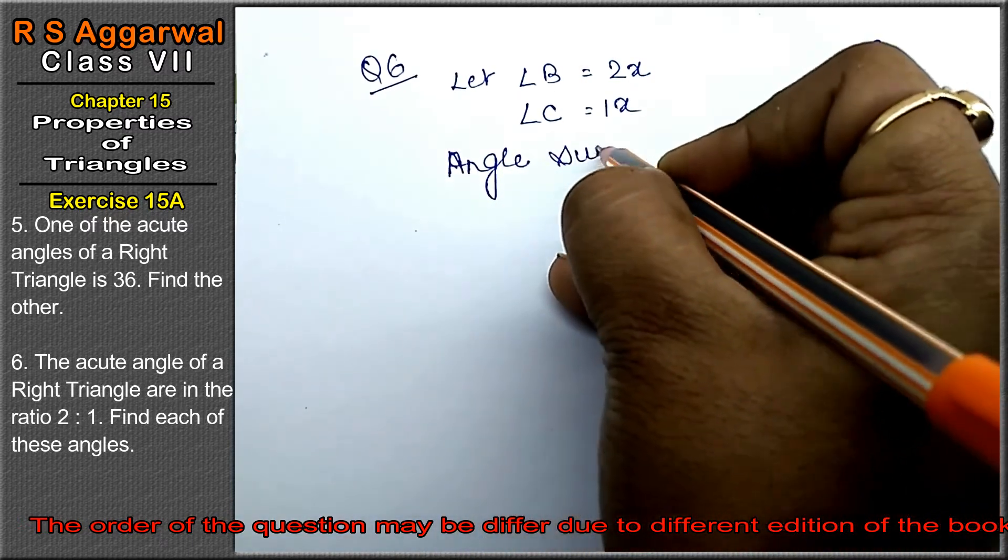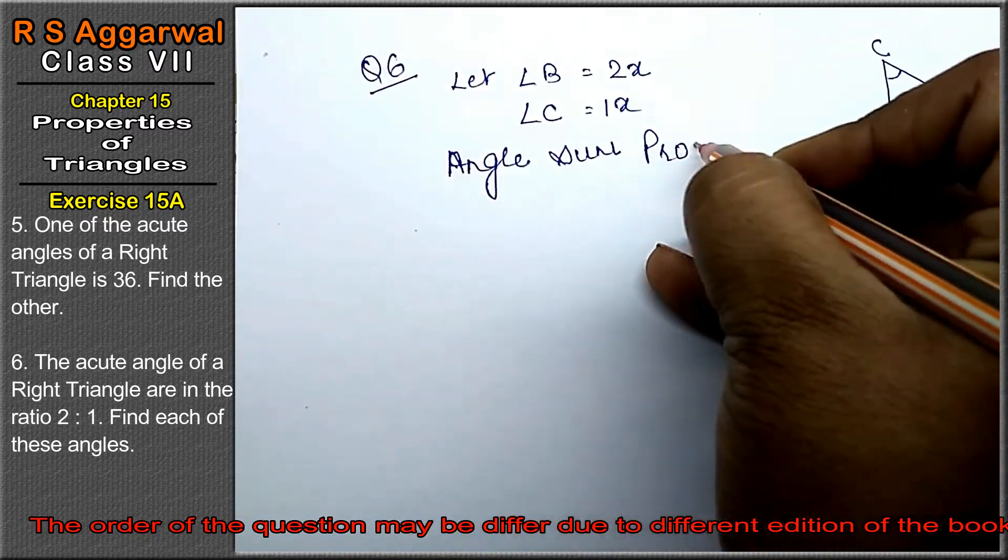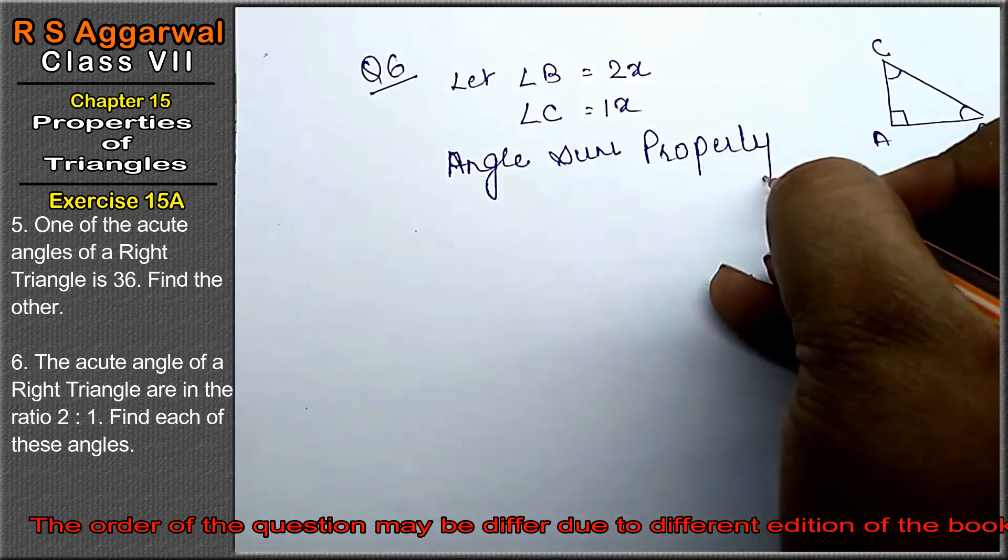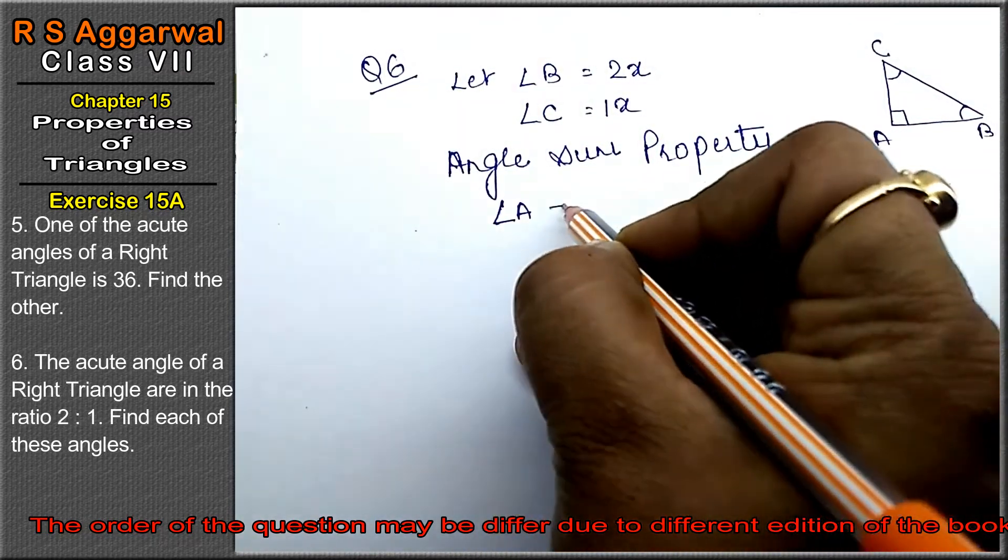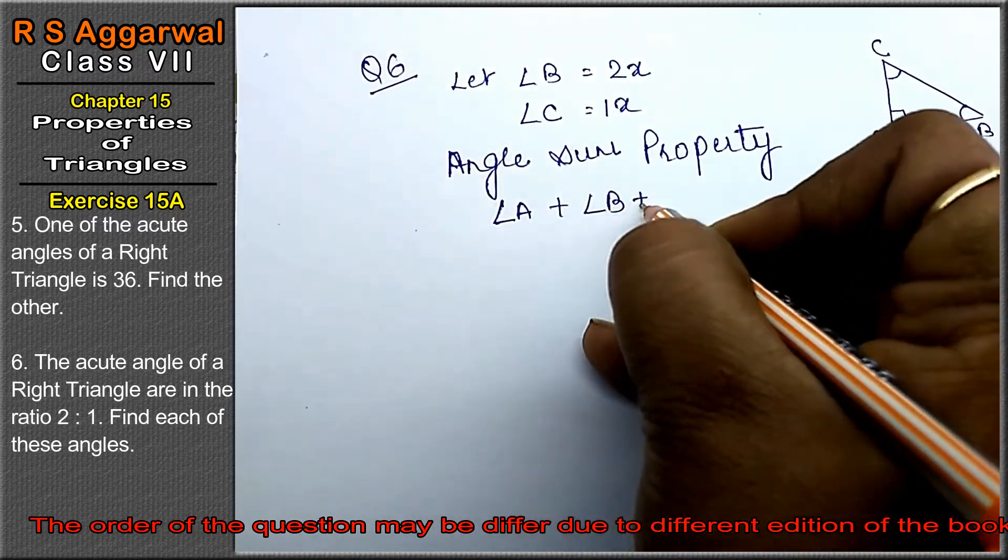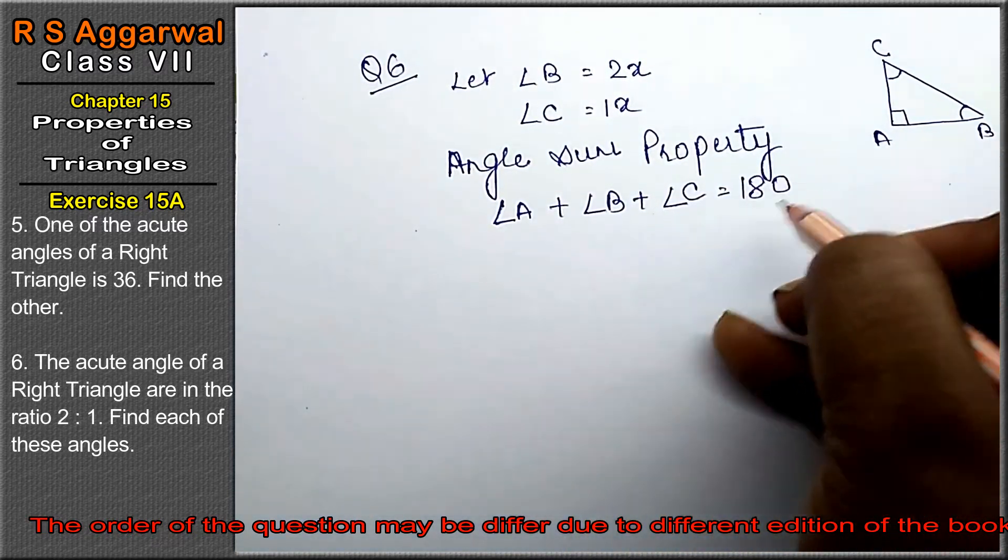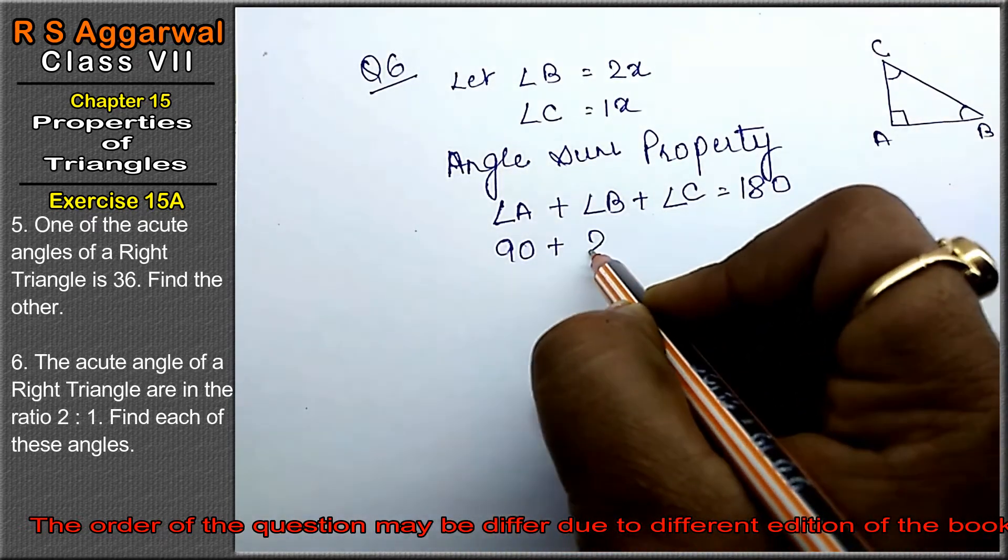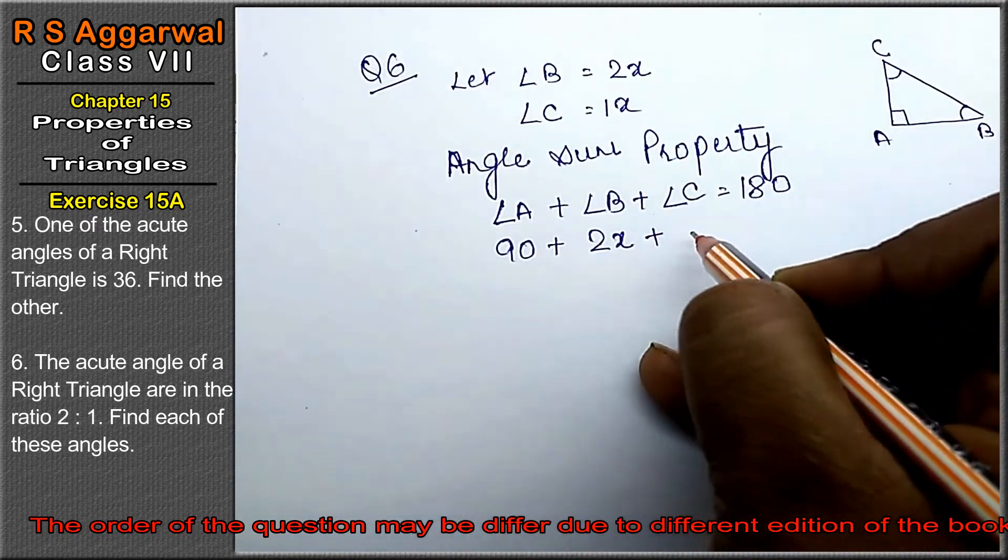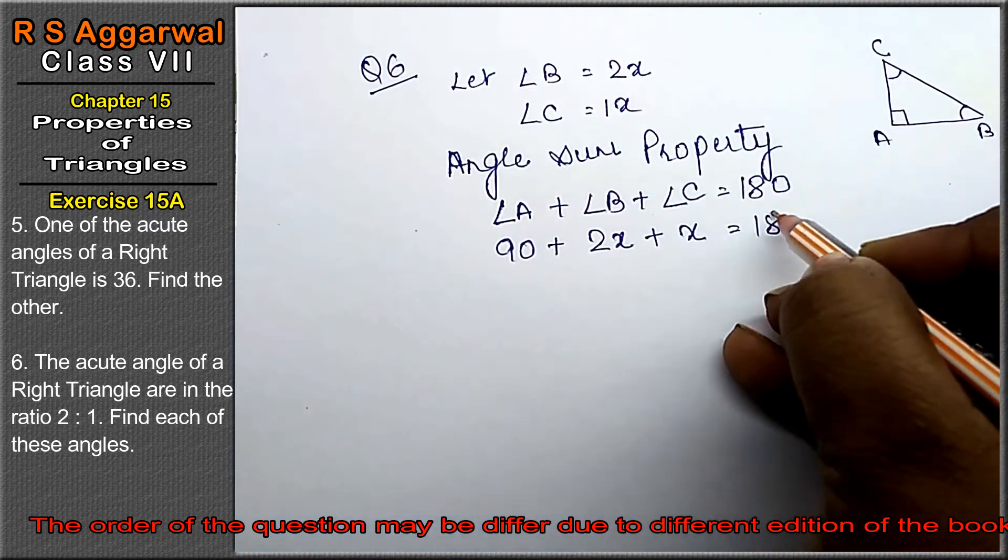Now which property? Angle sum property. Because we have 3 angles: angle A plus angle B plus angle C equals 180 degrees. Angle A is 90 degrees, angle B is 2x, angle C is x, equals 180 degrees.